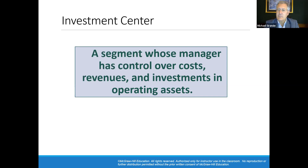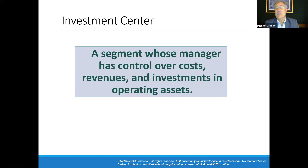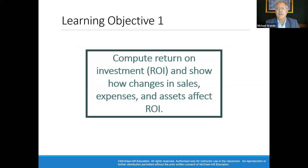What is an investment in an operating asset? It could be something as simple as buying a new truck or machine, maybe a new building, starting up a new product line, or buying a small business that could be enveloped into the current business. Our first objective is to learn how to compute return on investment (ROI) and show how changes in sales, expenses, and assets affect return on investment.